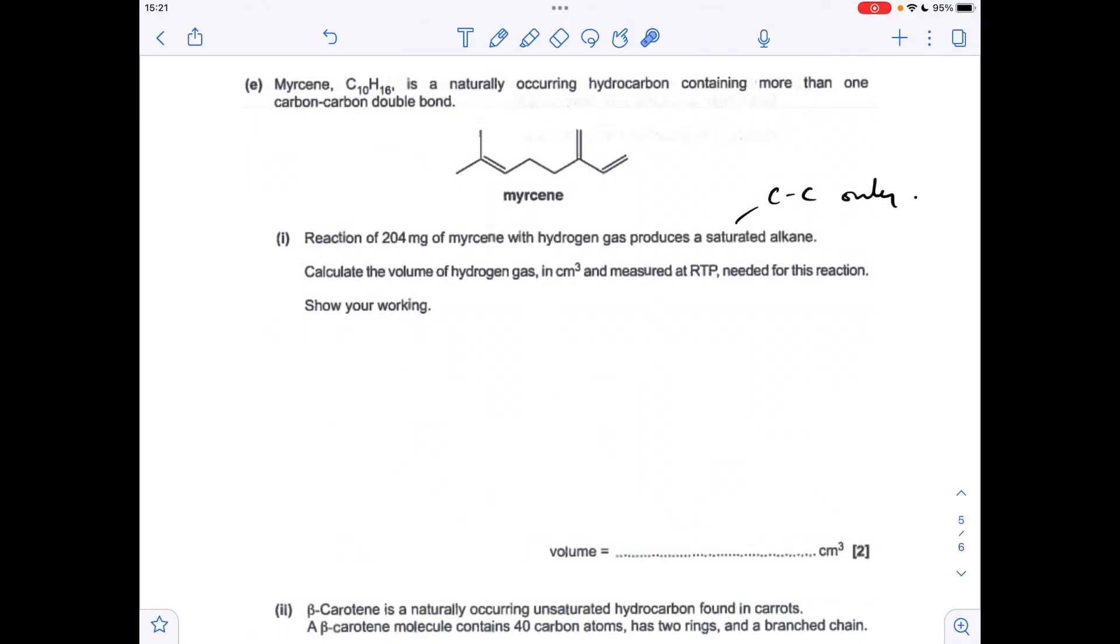Moving on to part E, so we've got a couple of calculations to finish. So we've got to work out the volume of hydrogen gas needed at RTP for the reaction. And because we're told it reacts to produce a saturated alkane, we have just carbon-carbon bonds in our product, which means that the three double bonds all react with the hydrogen. So the first thing we need to do is work out the moles of myrcene used in the reaction. So mass amount has to be in grams. So mass over MR, 0.0015 moles of the myrcene. So the moles of hydrogen needed is going to be 3 times this, because of those three double bonds. So that's 0.0045 moles of hydrogen. And to turn it into a volume in cubic centimeters at RTP, we need to multiply the moles by 24,000, which comes out at 108 cubic centimeters.